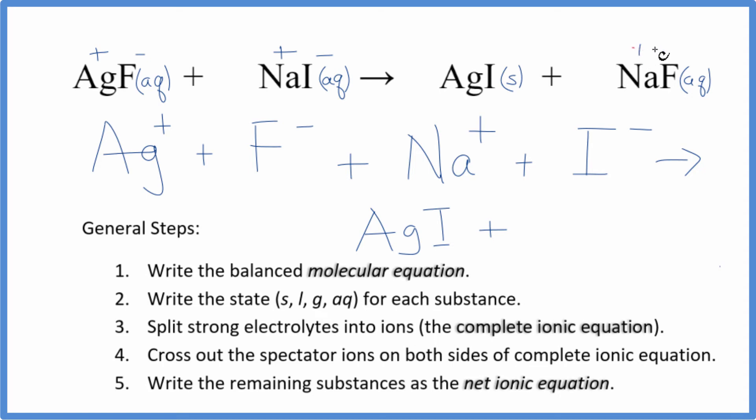We said Na is positive and the fluoride ion is negative. So we have Na+ plus F-, and this is the complete ionic equation.